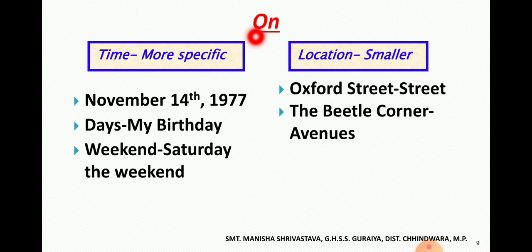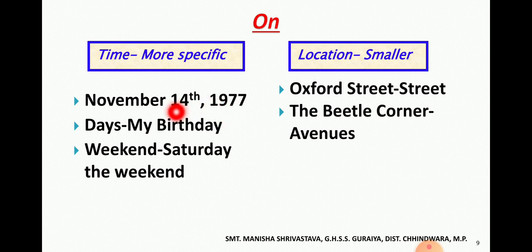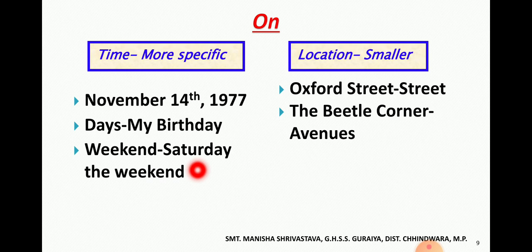Then comes 'on'. 'On' जो preposition है, यह time और location दोनों के लिए use किया जाता है. Time के लिए, 'in' की तुलना में यह more specific होता है — जैसे 'I was born on November 14th, 1977' — date के लिए on का use. Days के लिए: 'meet me on my birthday', 'meet me on Saturday' — specific day या date बताने के लिए 'on' का use करते हैं.